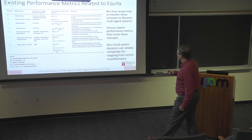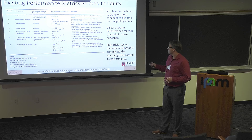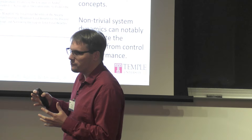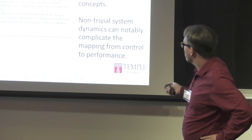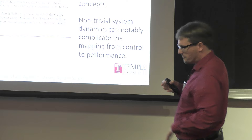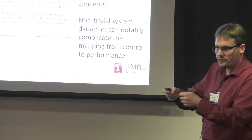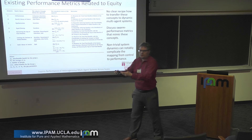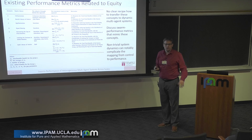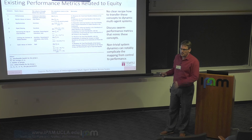Another challenge is formulating swarm performance metrics — what does it mean to say this swarm performed well or not well? Third, the system dynamics of multi-agent systems can be highly non-trivial. The mapping between your control variables — the decisions you make — and the final performance through the system dynamics can be highly counterintuitive and not fully understandable. Understanding the system dynamics themselves via simulations, mathematical analysis, and so on is an important ingredient.